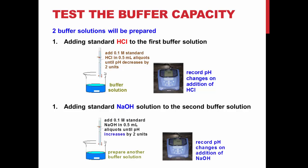Repeat this procedure with a second buffer solution, but adding 0.1 M sodium hydroxide from the burette to the solution instead. Remember to record the initial pH of the buffer. For this solution, add base until the pH increases by 2 units, recording pH and volume of base added for each aliquot, the same way you did for the previous solution.